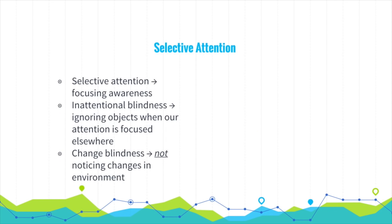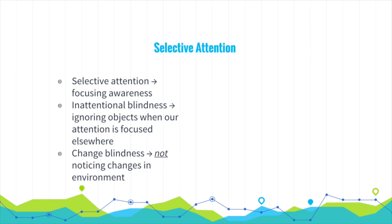Now we're going to talk about selective attention, which is basically focusing your awareness on one thing or another. A good example is the cocktail party effect — while we can hear many voices speaking at the same time, we can only process one of those voices at a time. This diagram also showcases selective awareness: while we can see the cup and the faces, we can't see both at the same time.